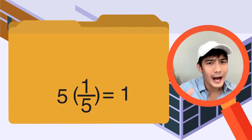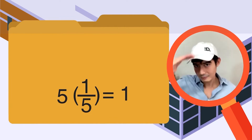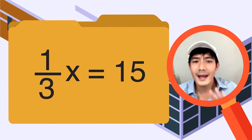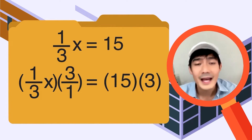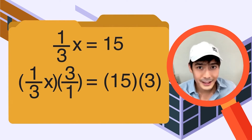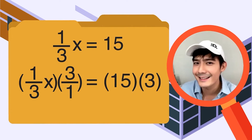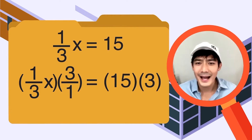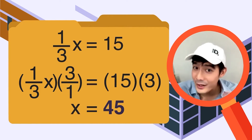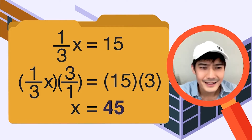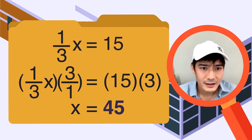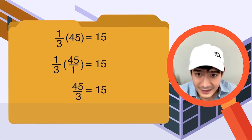Balik tayo sa problema natin. Anong ang ating multiplicative inverse o reciprocal ng 1/3? Para maging 1 — tama — 3, or 3 over 1, simply 3 lang. This gives us: 1/3 x times 3 over 1 is equal to 15 times 3. 1/3 times 3 over 1, or simply 3, is 1. May iwan yung x — isolated na siya. 15 times 3 is equal to 45. Ang ibig sabihin nito, yung value ng x natin sa equation na to ay 45. I-check nga natin: 1/3 times 45 is simply 45 over 3. 45 divided by 3 is 15. 15 is equal to 15. Madali lang — diba?